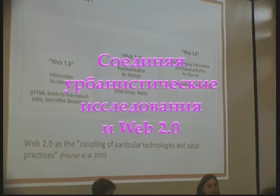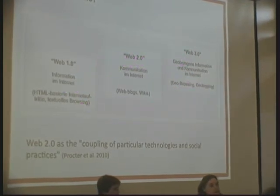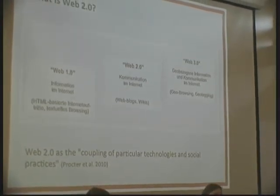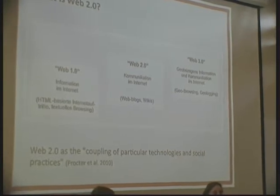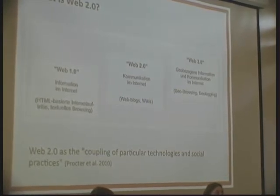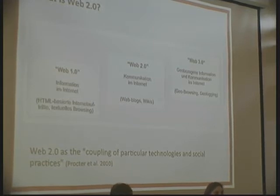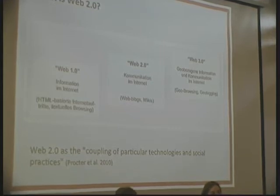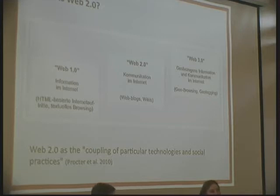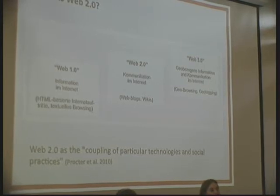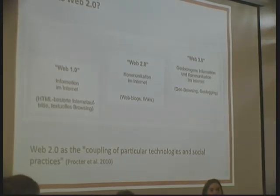While Web 1.0 was mainly about information via the computer, Web 2.0 is the communication part via the internet and via the computer. So people start interacting, in comparison to just simple websites where you can get your information. While in Web 2.0 sites you can communicate and interact. And in contrast to what you heard this morning, Web 2.0 is about human-to-human interaction — it's not human-to-artifact interaction.